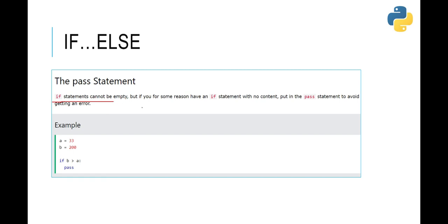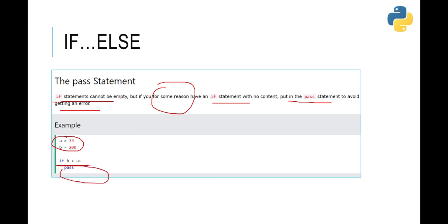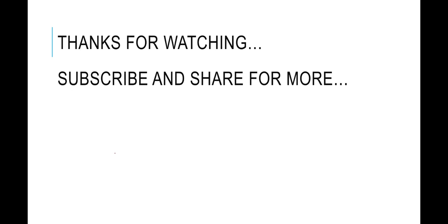Next we have the 'pass' statement. If statements cannot be empty — this is a requirement in Python. But if for some reason you have an if statement with no content, put in the 'pass' statement to avoid getting an error. Here we have a equal to 33 and b equal to 200. We have nothing to execute if b is greater than a, so we just write 'pass' — nothing will happen and there will be no error. That's quite interesting.